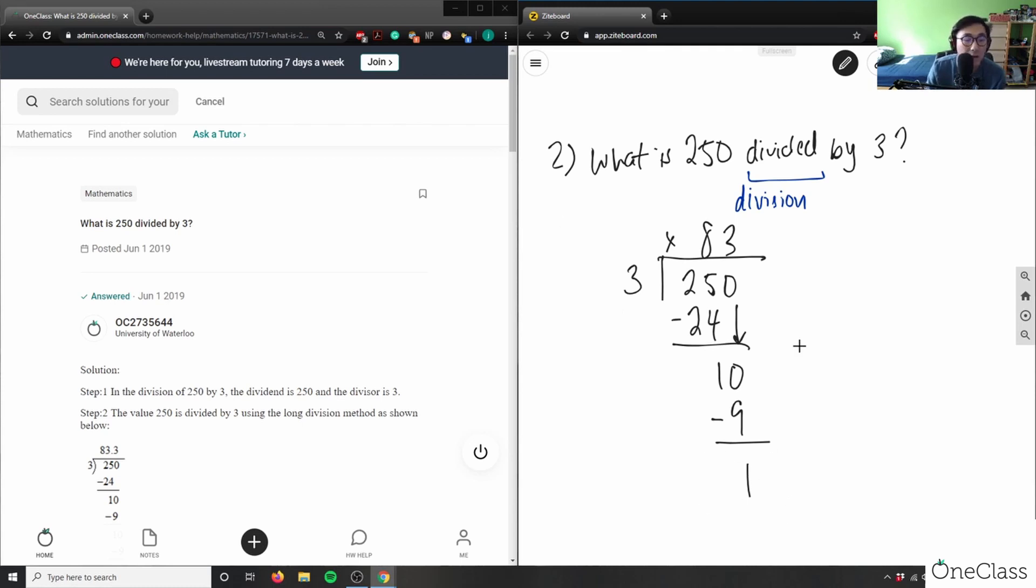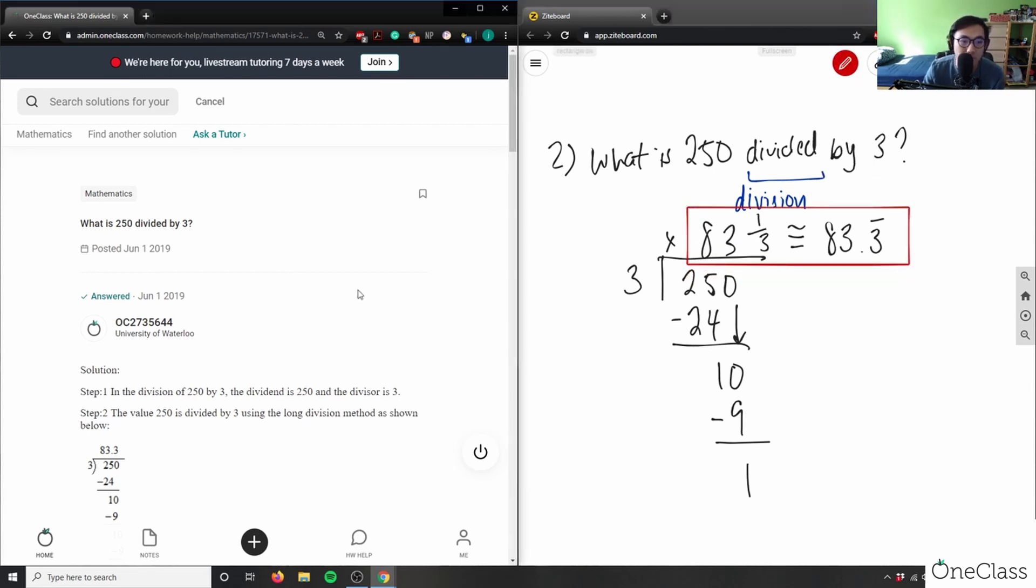My answer is 83 with a remainder of 1 over our divisor, so it's 83 and 1/3. Or in decimals it would be 83.3 with the bar - 3 is a repeating number. This is the correct answer: 83.3 bar or 83 and 1/3.